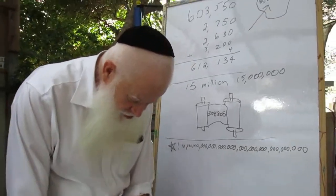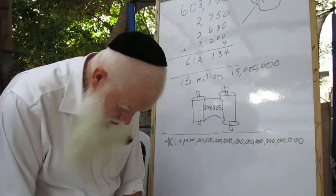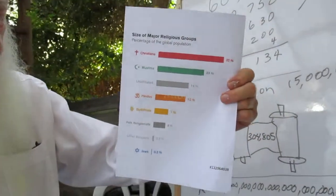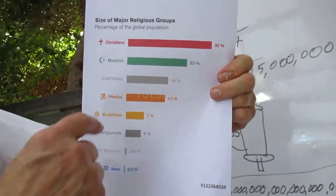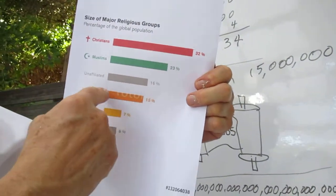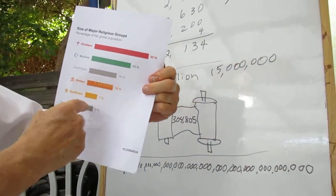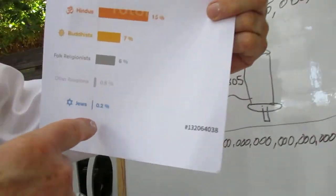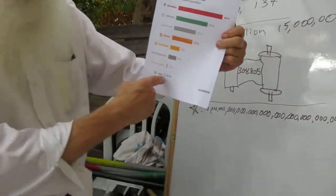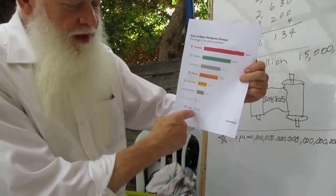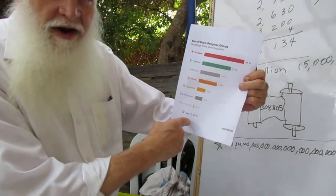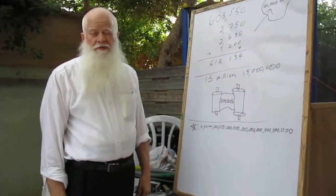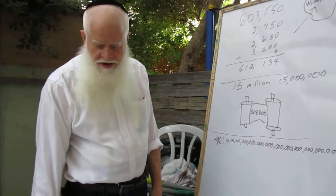In fact, if you look at the numbers of people in the world, Christians, Muslims, these people, those people, those people, and the Jews, they don't even get a speck on the chart. 0.2%. So we're a tiny part of the whole world. But there's a big job for us to do. A job that nobody else has.